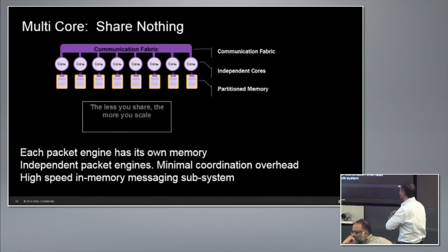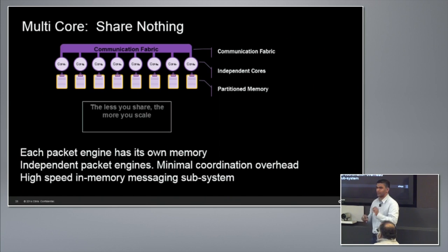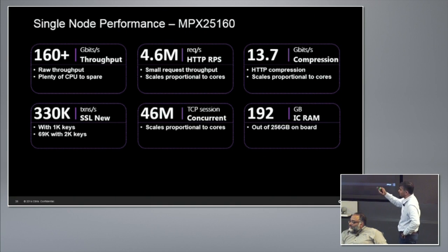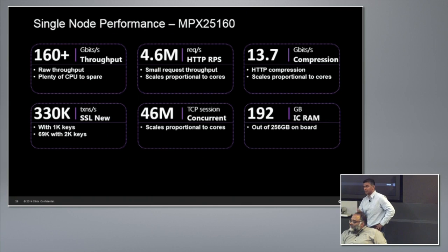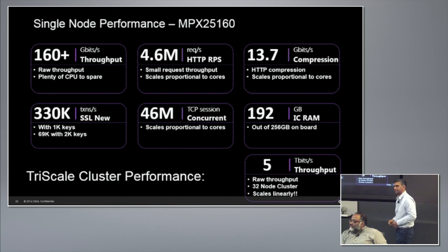As a quick recap: inside the box, you have multiple packet engines, one on each core, each with its own virtual address space, and very little sharing between them. There's a communication subsystem built on shared memory for the minimal coordination needed. What you get with this architecture on the latest platform: 160 Gbps, 4.6 million HTTP requests per second on a 15 packet-engine system. These numbers scale linearly as you add more packet engines, and also as you add more nodes in clustering — we've demonstrated up to 5 terabits per second through a 32-node cluster.